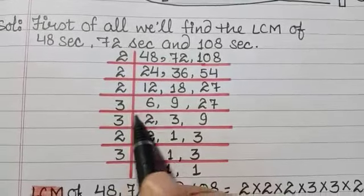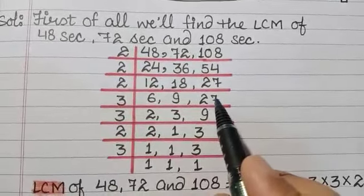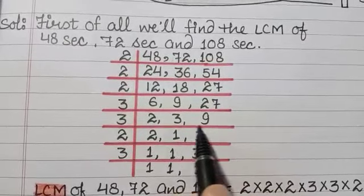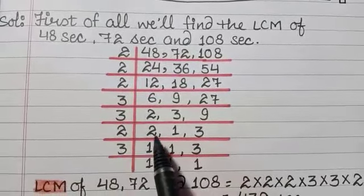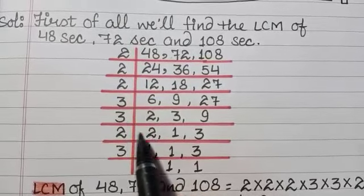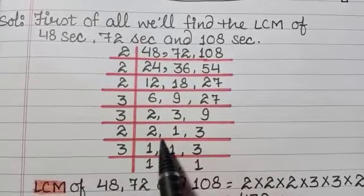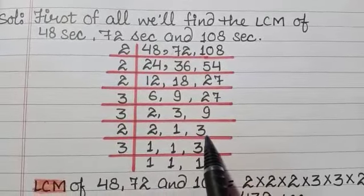3 into 2 is 6, 3 into 3 is 9, 3 into 9 is 27. Now 3 and 9 are divisible by 3. So 2 divided by 3, we cannot divide 2 with 3, so we will write it as it is. 3 divided by 3 is 1, 9 divided by 3 is 3.